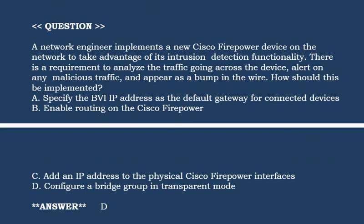Next question: A network engineer implements a new Cisco Firepower device on the network to take advantage of its intrusion detection functionality. There is a requirement to analyze the traffic going across the device, alert on any malicious traffic, and appear as a bump in the wire. How should this be implemented?